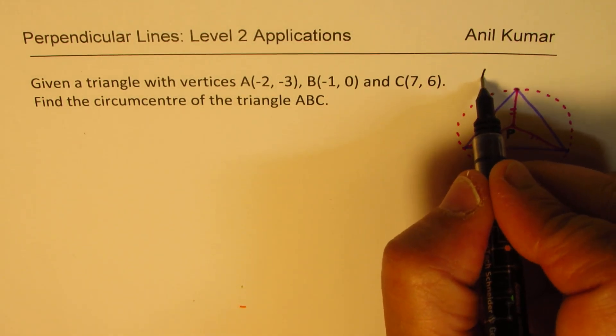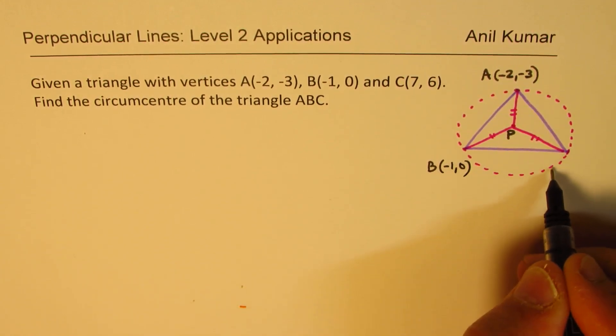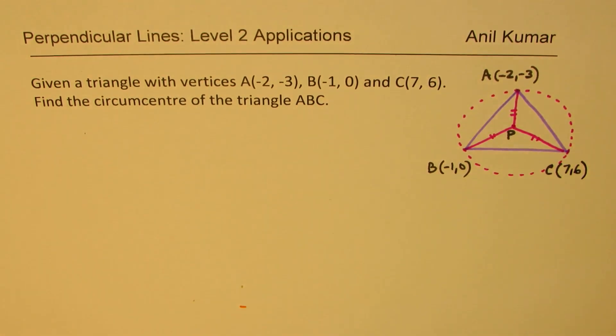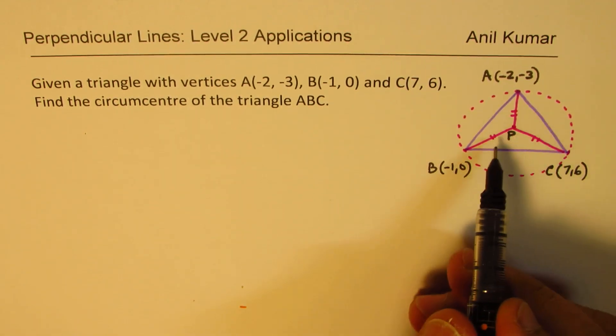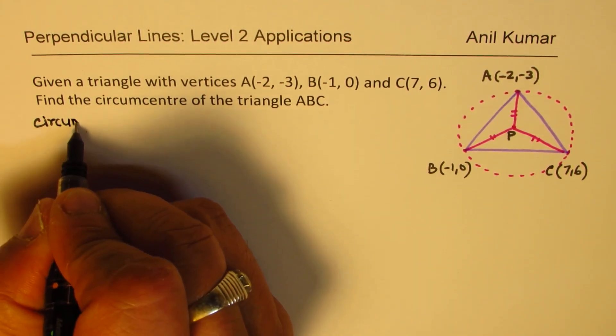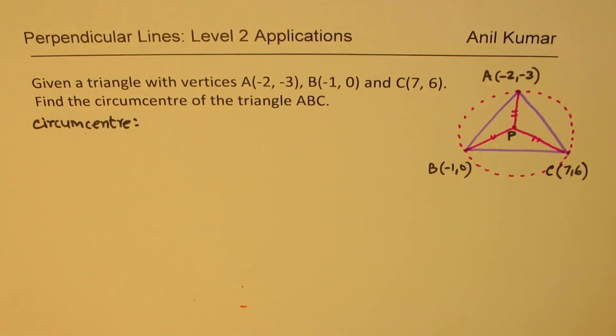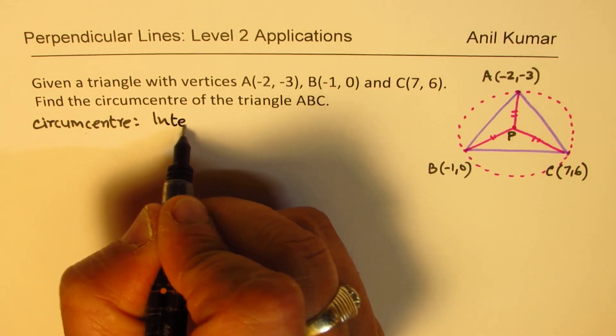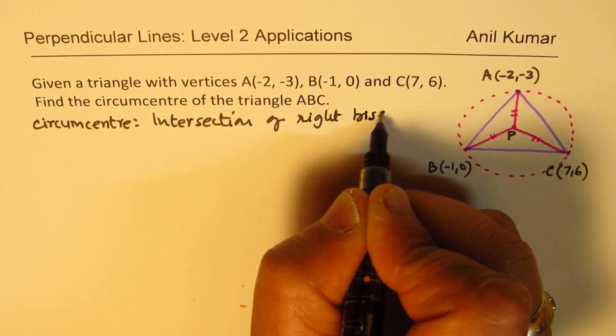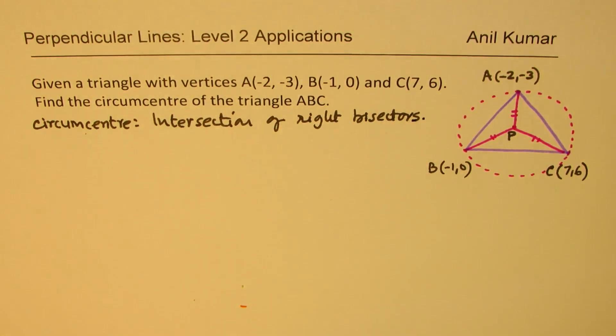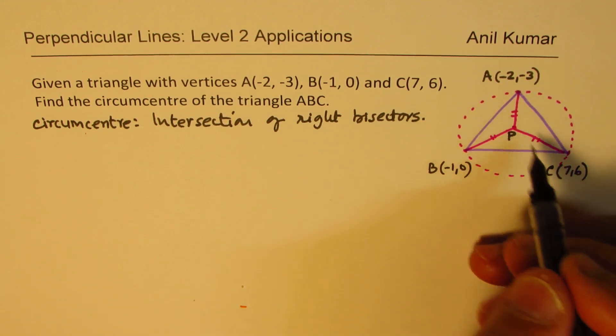we are given the vertices A, which is (-2, -3). Let's say this is B, which is (-1, 0), and this is C, which is (7, 6). Circumcenter you can get by intersection of perpendicular bisectors. So circumcenter means we are looking for a point which is intersection of right bisectors. So we will do right bisectors of AC and BC. So we will just find the right bisectors of AC first.